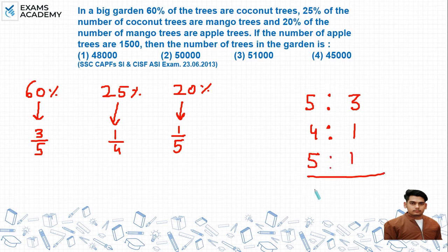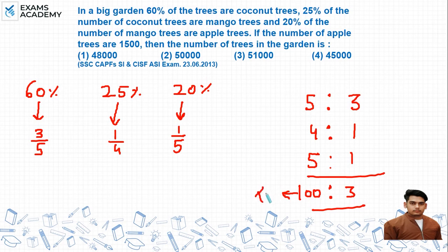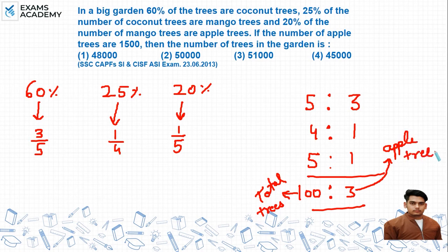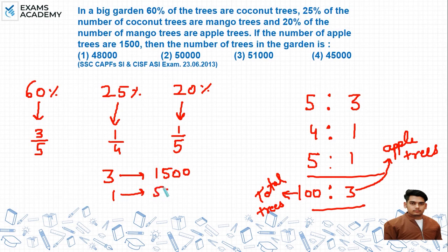Multiplying the ratios gives 5 × 5 × ... = 25 and 400, so the ratio of total trees to apple trees is 100:3. Since 3 units equals 1500 apple trees, 1 unit equals 500. Therefore total trees = 100 units = 50,000, which is option number 2.